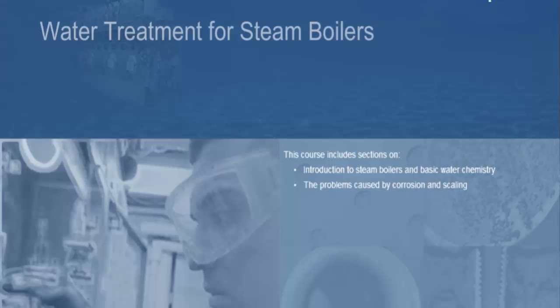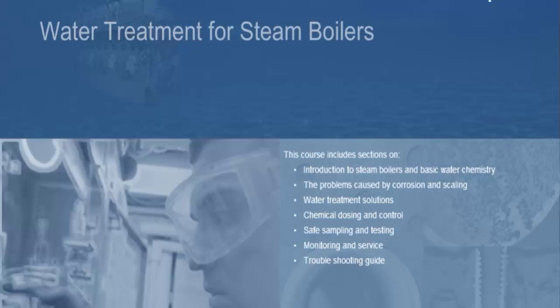The course goes on to look at the problems caused by corrosion and scaling and the water treatment solutions that are available. The course examines the importance of correct chemical dosing and control and the procedures for safe sampling and testing. There is a section on monitoring water test results and a look at the tools and service that are available. At the end of the course there is a troubleshooting guide.